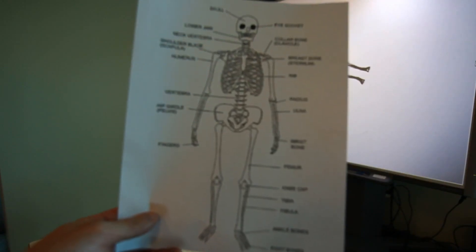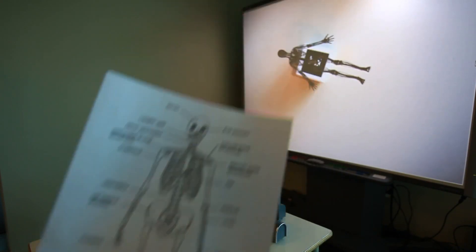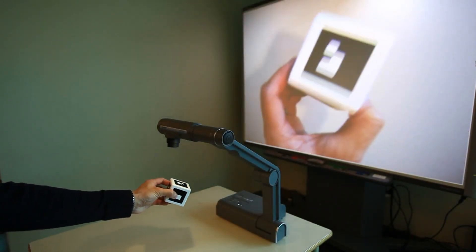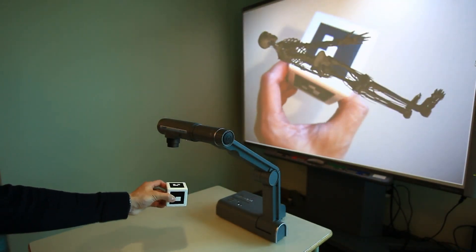For example, rather than simply showing students a 2D image of the human skeleton, educators can now place a marker underneath the document camera to display a 3D image that can be rotated and explored.